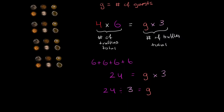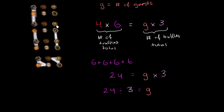Let's divide into groups of three. Here is one group of three, two groups of three, three groups of three, four groups of three, five groups of three, six groups of three, seven groups of three, and eight groups of three. So if I take 24 things and divide into groups of three, I get eight groups. So G, or 24 divided by 3, equals 8 — the number of guests at the party.